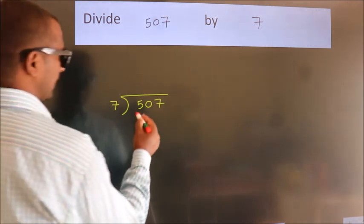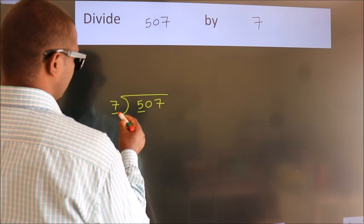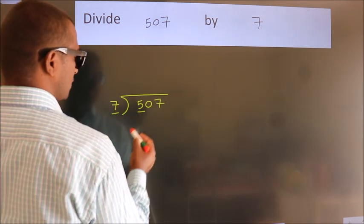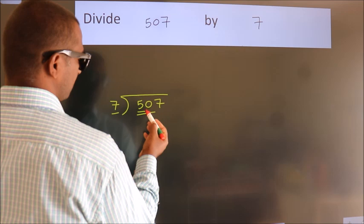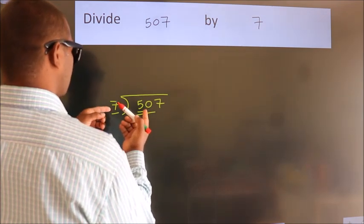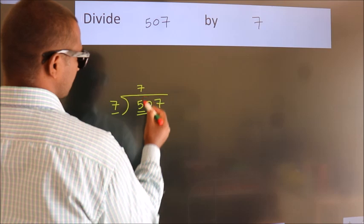Next. Here we have 5, here 7. 5 is smaller than 7, so we should take two numbers. 50. A number close to 50 in the 7 table is 7 times 7 equals 49.